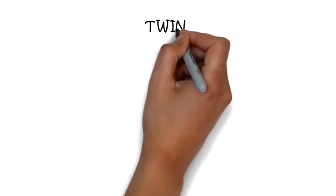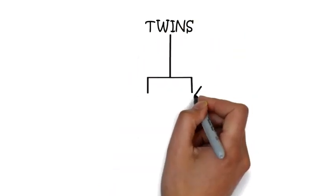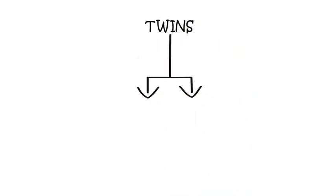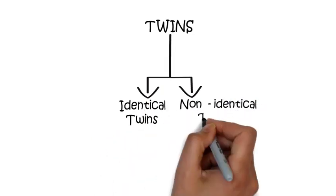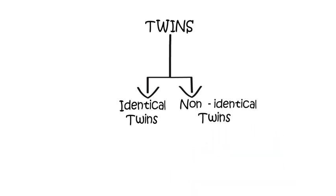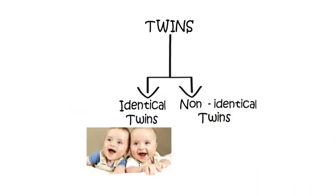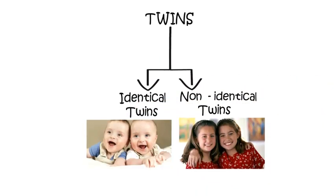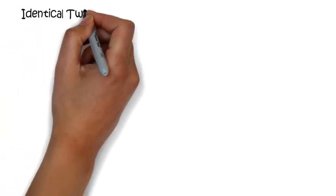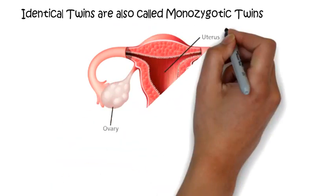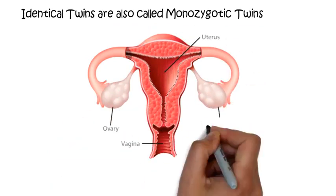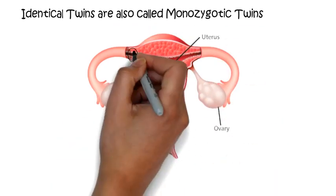Now we will be looking at twins. Actually, there are two types of twins: identical twins and non-identical twins. Identical twins are called monozygotic twins. Mono means singular, so a single zygote is formed in these types of twins — hence it is called monozygotic twins.